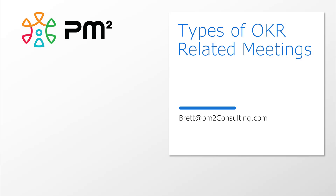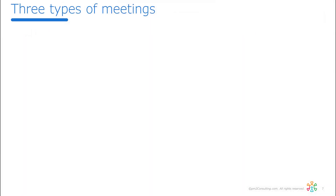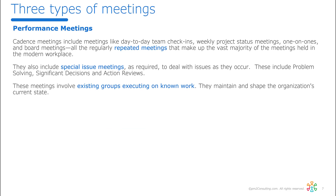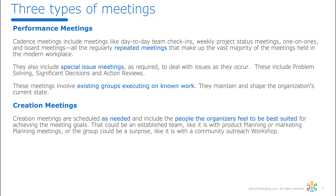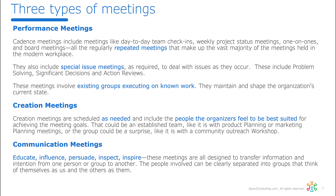In this quick video, I'd like to give you an overview of the types of meetings we have associated with OKRs. There are three types of meetings overall. First, performance meetings — this is what we normally think of when we think of OKRs, the daily and weekly meetings where we deal with performance issues. Second, creation meetings, where we're creating new things like new OKRs or new marketing campaigns. Third, communications meetings, where we're talking to people, educating, influencing, and inspiring them.